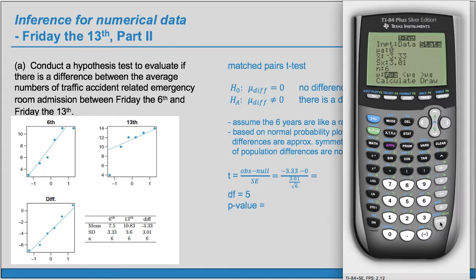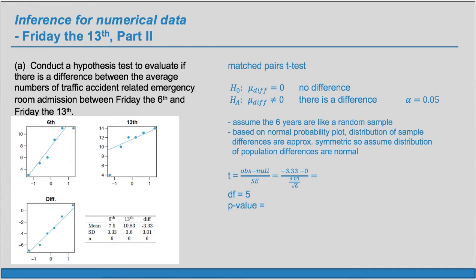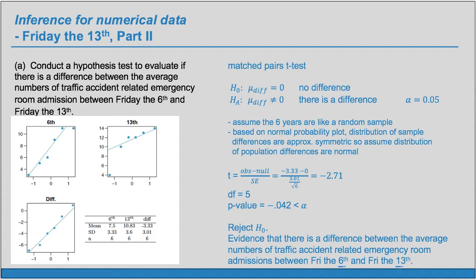Now I'll calculate. This gives me my t of negative 2.71 and a p-value of 0.042. So we can record those values. Now we observe that our p-value is less than alpha, and so our conclusion is reject H sub 0. If we reject H sub 0, we have evidence for H sub A, which is to say evidence that there is a difference between the average numbers of traffic accident-related emergency room admissions between Friday the 6th and Friday the 13th.